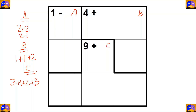Now let's fill in the cages with one option, similar to what we did in the previous puzzle. Cage B will be one here, one here, and two here. Now in cage C there is a repeat of three, so one three will come over here as it would be a repeat in the column if both threes came here. So three will be over here.